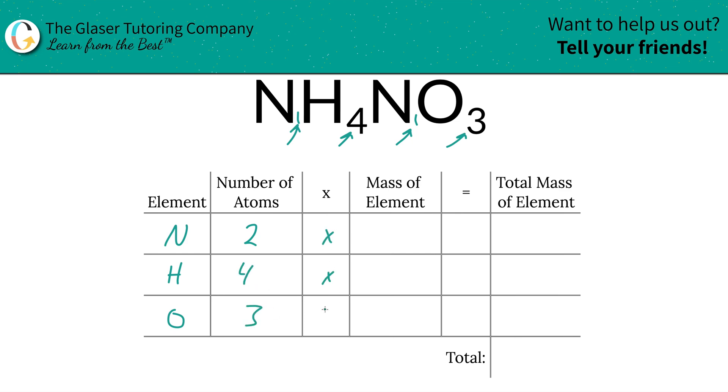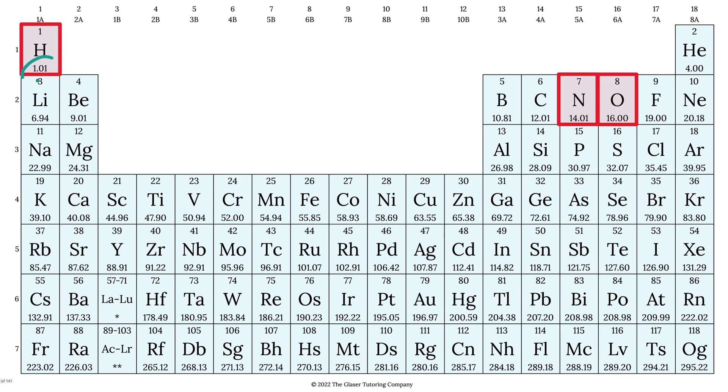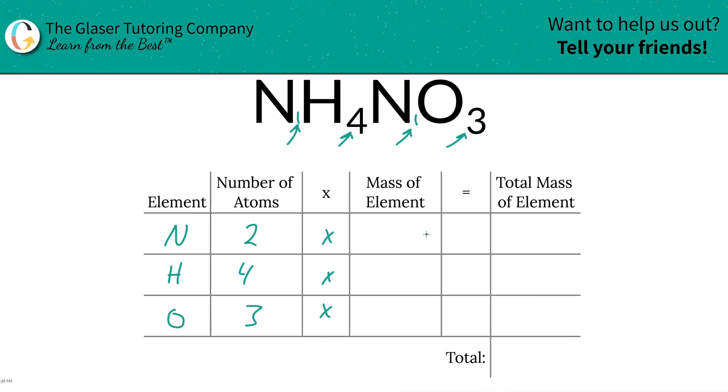Then all we're going to do is multiply those number of atoms by the mass of each element. That's where the periodic table comes into play. Mass of hydrogen is 1.01, nitrogen is 14.01, and oxygen is 16. So we have 14.01, hydrogen is 1.01, and oxygen is 16.